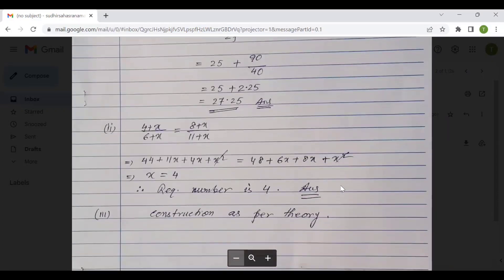Then the second part, the answer is four of the eighth question. What number must be added to each of the numbers in order to get the four numbers in proportion? So x equals to four. The third part of course is construction as per your theory.